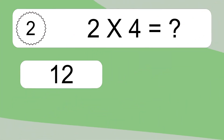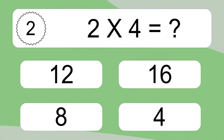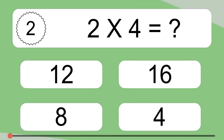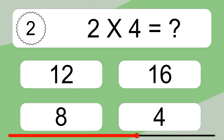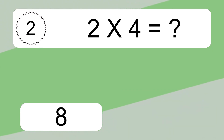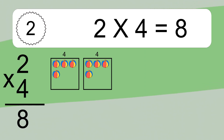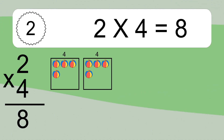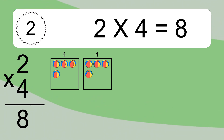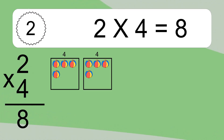2 times 4 equals what? 2 times 4 equals 8. We have 2 boxes, and each box has 4 colorful balls inside. If you count all the balls in all the boxes together, you will have 2 times 4 balls. This equals 8 balls.